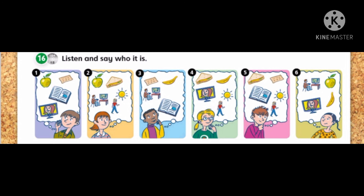Number 6. She wants a sandwich and a banana. She wants to watch TV and go for a walk. It's number 4.